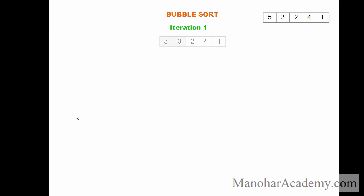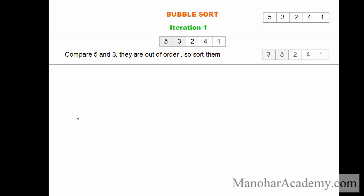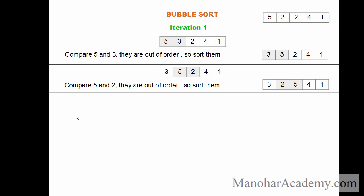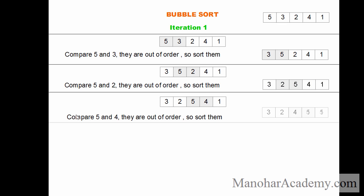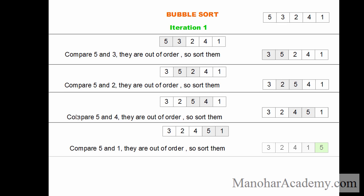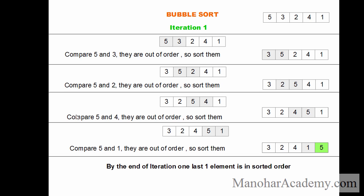This is the bubble sort algorithm. We have an array: 5, 3, 2, 4, 1. We want to sort it. Iteration one — basically, we compare the first two elements. As they are out of order, we are going to swap them. After swap, it is going to be 3, 5, 2, 4, 1. Again, we compare the second and third element and swap them — you can see 5 and 2 swap to 2 and 5. We do the same with the third and fourth element and swap them again. Now we compare the last two elements and swap them. By the end of iteration one, the last element is in the sorted order.